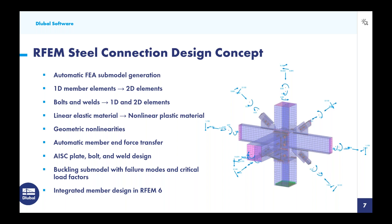We get full design according to the AISC for our plates, bolts, and welds, which we'll see in the design results within our example. We also create a separate submodel for the buckling analysis, giving us various buckling failure modes graphically as well as critical load factors in table format. A big benefit is the integrated member design all within one file.